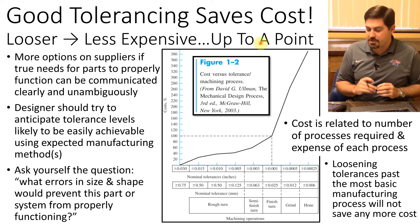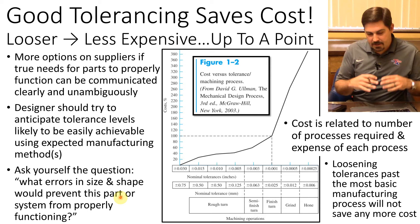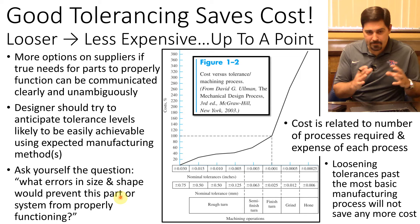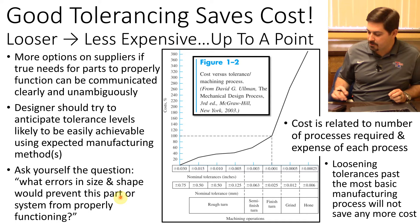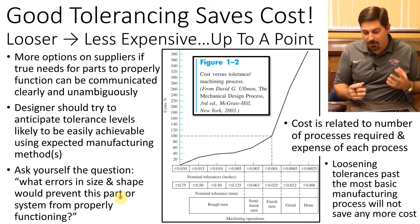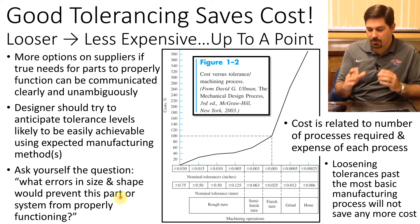A good question to always ask yourself: what errors in size and shape would prevent this part or assembly from properly functioning? Keeping that in mind lets you specify the loosest tolerances that will still make your system work — without going so loose that it stops functioning. Sometimes you have multiple tolerances that all need to be considered together to ensure the system functions even in a worst-case scenario.